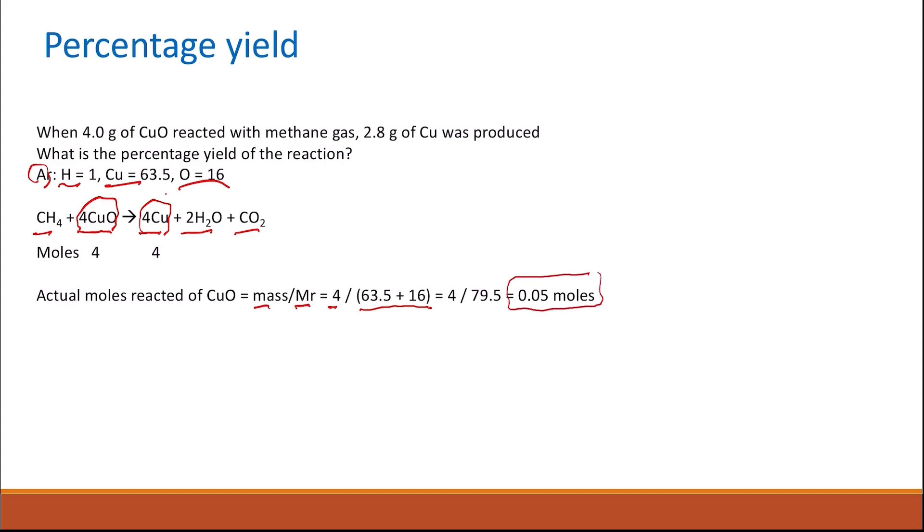So 0.05 moles of copper oxide were actually used in this reaction. And if the reaction goes 4 moles of copper oxide gives you 4 moles of copper, that means also the maximum expected number of moles of copper to be produced is 0.05 moles.